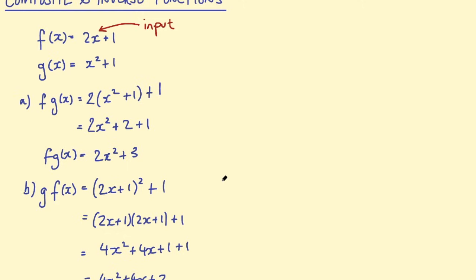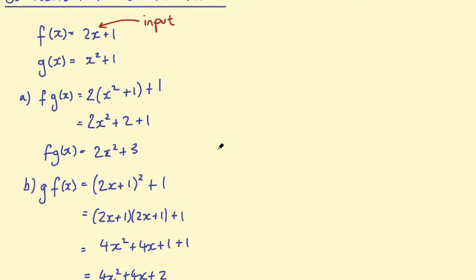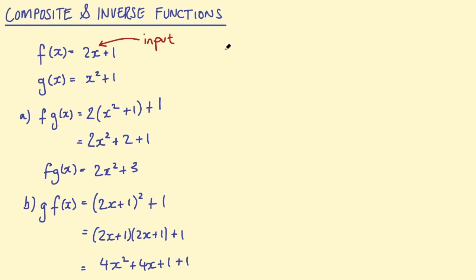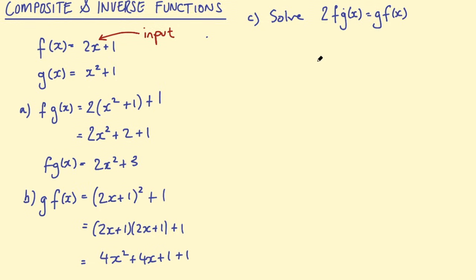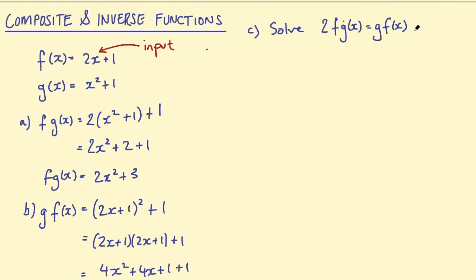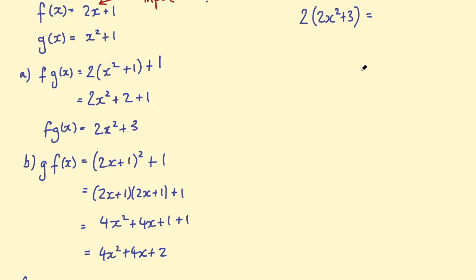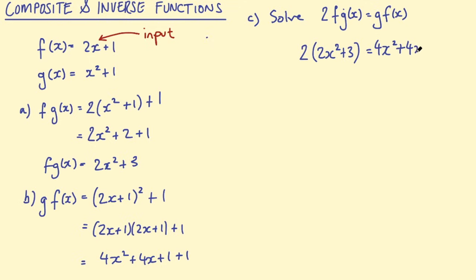Questions can get more complicated when you combine different elements of algebra. For example, a question might say: solve 2·f(g) = g(f). We need to take the solutions to these functions, make them equal, and solve the equation. We have f of g equals 2x squared plus 3, so we multiply that by 2, giving 2 times (2x squared plus 3). We also have g of f, which is 4x squared plus 4x plus 2 on the right-hand side.